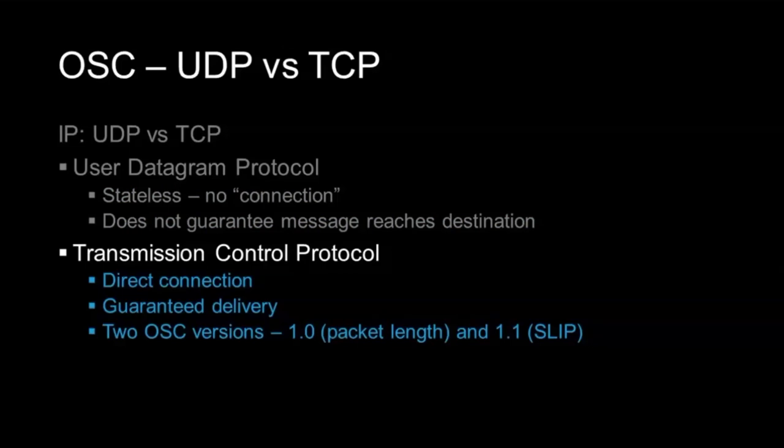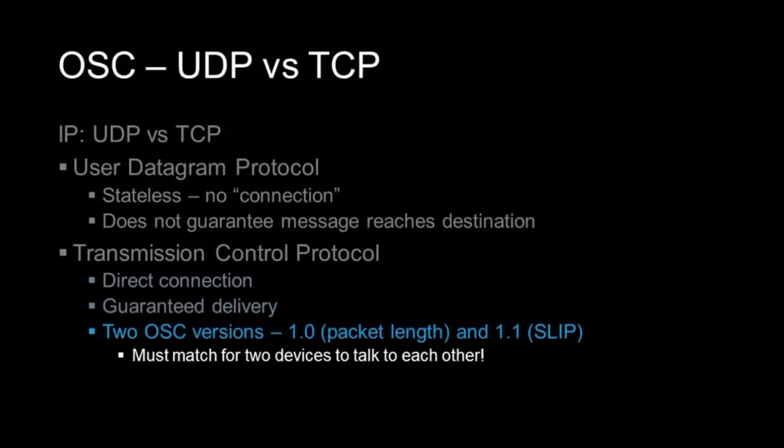There are two TCP versions of OSC. TCP OSC 1.0 sends a message length at the beginning (e.g., 'this message is 16 bytes long') and the other side processes accordingly. TCP OSC 1.1 (SLIP — Serial Line IP) uses a special bookend protocol: a start tag saying 'start listening' and an end tag saying 'stop listening.' You have to match them so both devices know how to talk to each other, or one side will wait for a bookend that never arrives. It's easy trial and error — it just won't work if mismatched, and you can try the other setting.